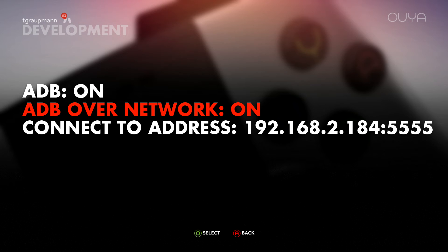What you see on screen is an IP address, colon, and a port number. You use that with the Android debugger to connect to it. In your terminal or shell, you type in ADB — that's the Android debugger — then ADB space, the word connect, space, and then the IP colon port number. Yours is going to be different each time you run it; it just depends on your network. But that will let you connect wirelessly to the OUYA or over Ethernet.